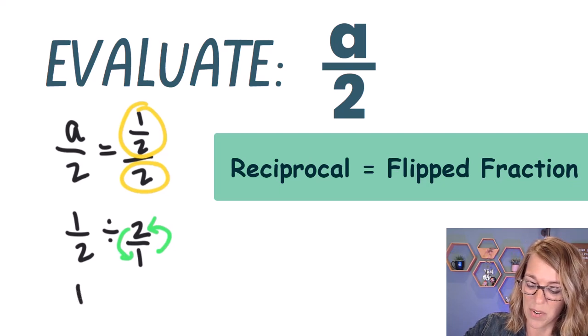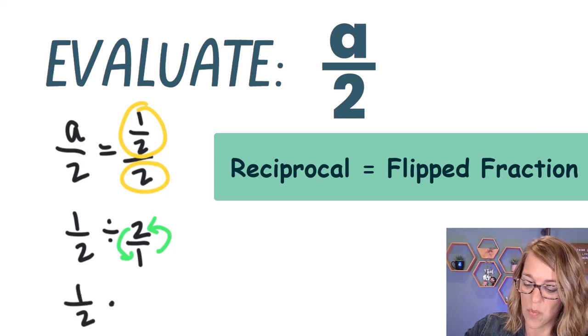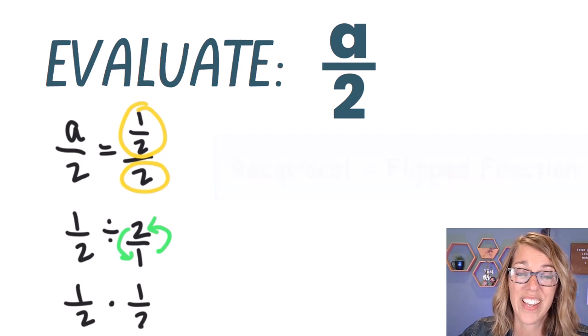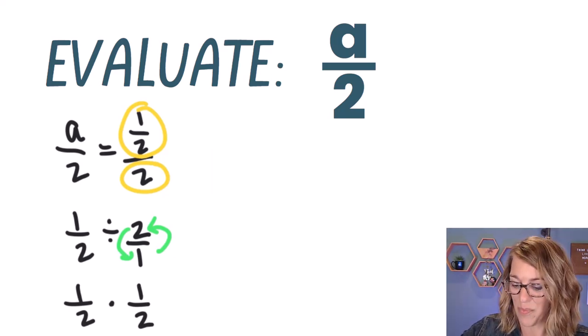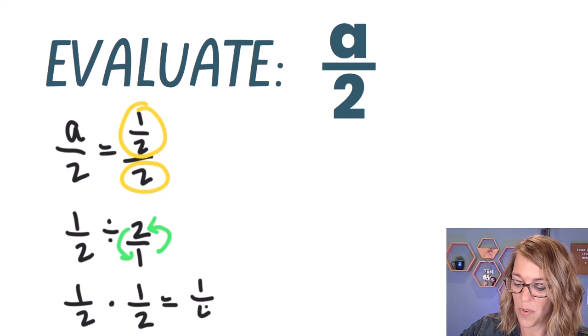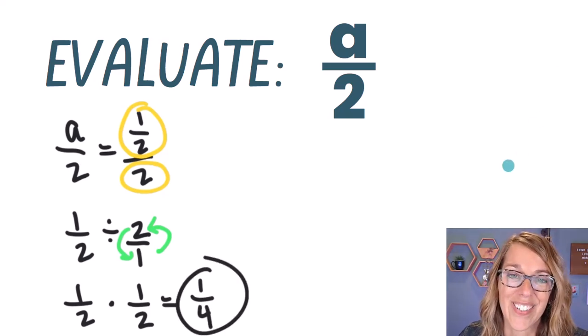So now I have 1/2, I'm going to multiply by my reciprocal, 1 over 2, and I can multiply straight across. One times one is one, and two times two is four. And that is our answer.